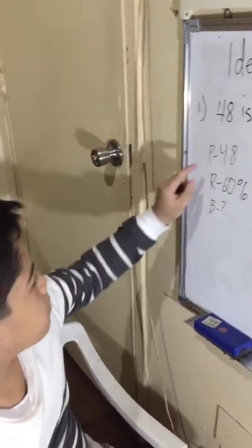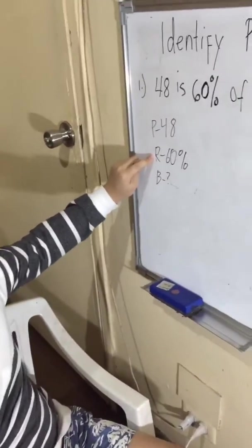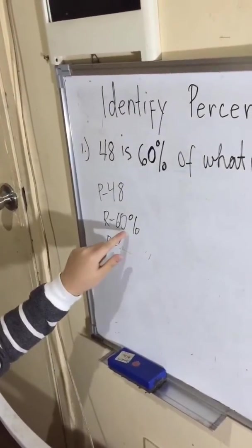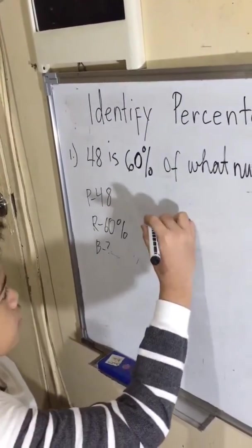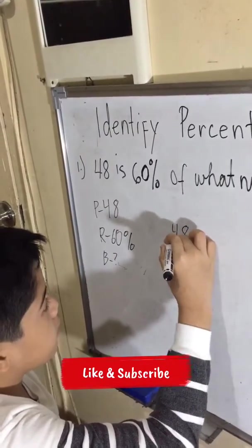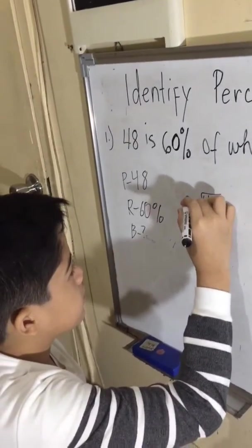So to find the base, we need to divide the percentage by the rate, or 48 by 60%. So we need to change this into a decimal, so that would be equal to 0.60, so 48 divided by 0.60.